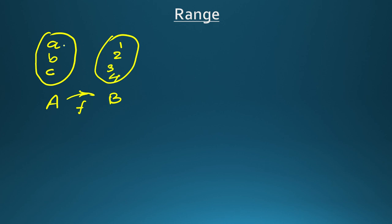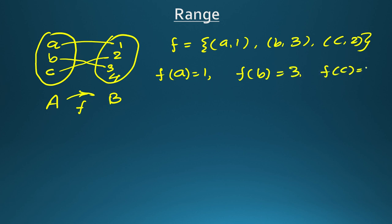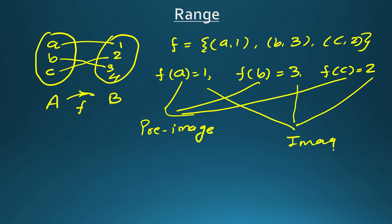For example, if A is related with 1, B is related with 3, and C is related with 2, then the relation written as ordered pairs is (a,1), (b,3), and (c,2). Or you can write it as f(a)=1, f(b)=3, and f(c)=2. Here a, b, c are called the pre-image, and 1, 3, 2 are called the image.